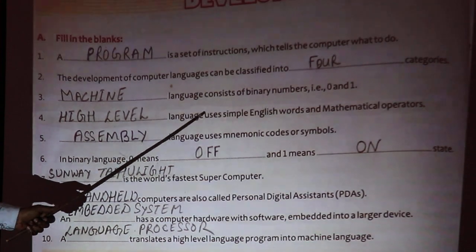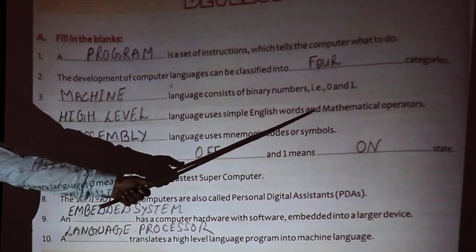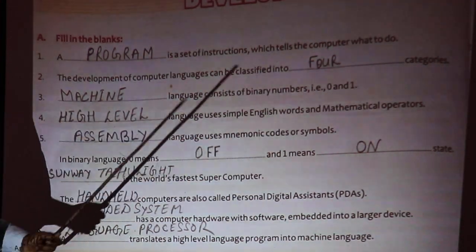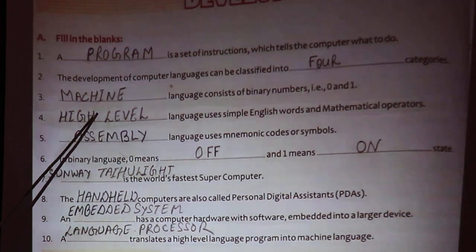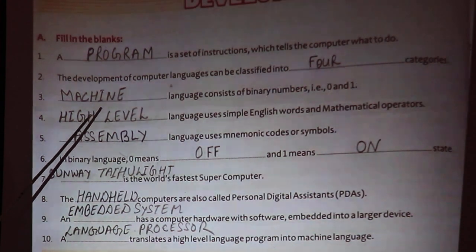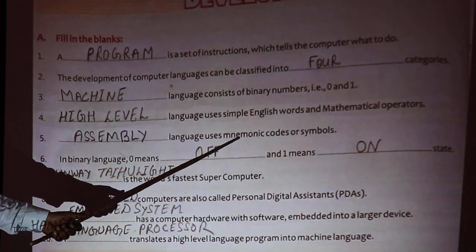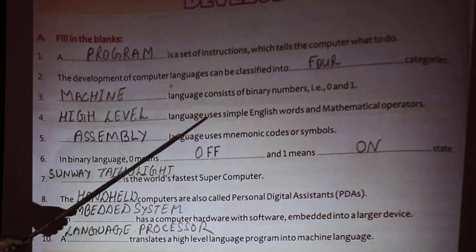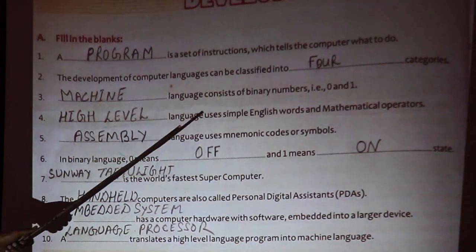Language that uses simple English words and mathematical operators is high level language. High level language is in a user-readable format. Mnemonic words are used in assembly language.